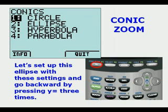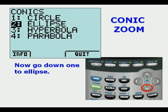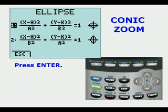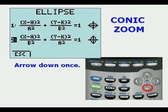Let's set up this ellipse with these settings and go backward by pressing Y equals three times. So we get to ellipse and we press Enter and arrow down once. So we're going to the second version of ellipse.